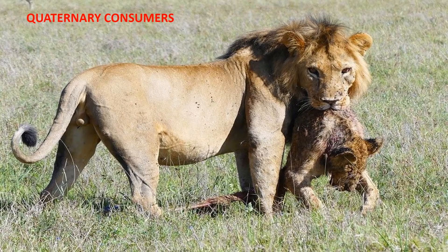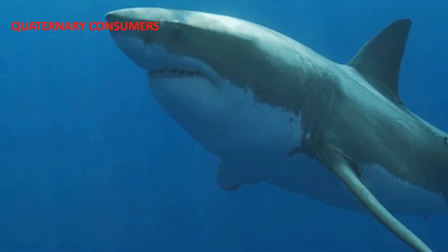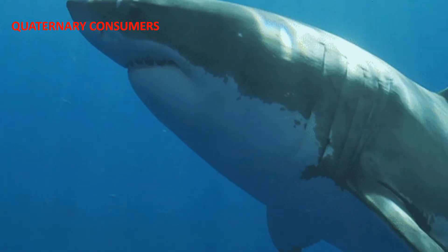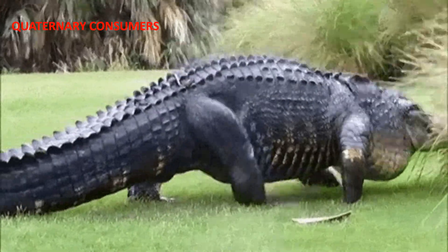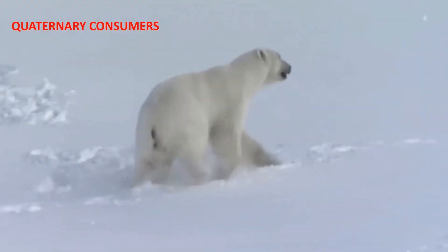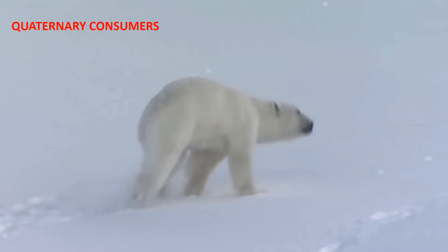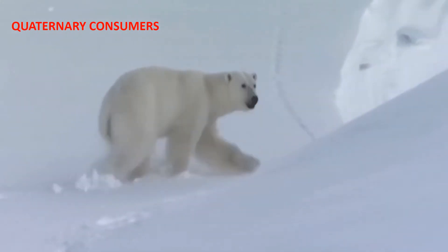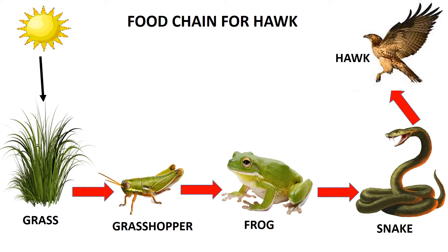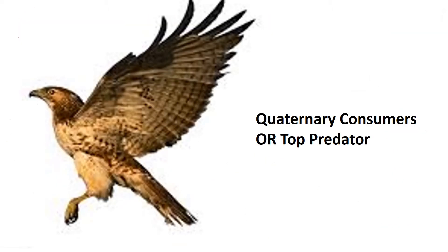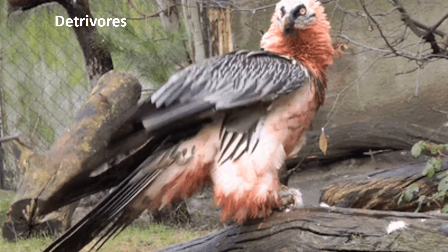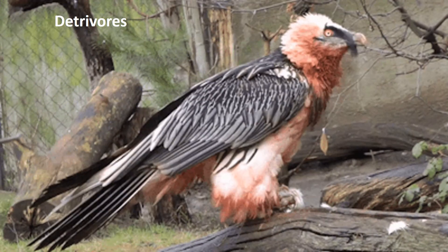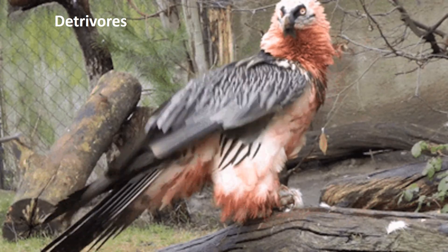Quaternary consumers are called the top predators. They are animals with no natural enemies. Each food chain ends with the top predator. In this example, the hawk is called the top predator.